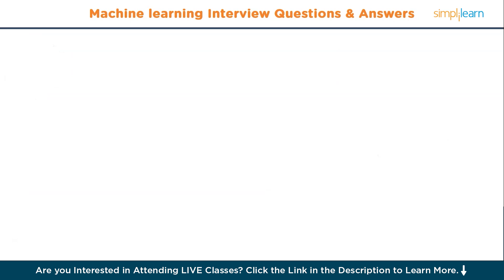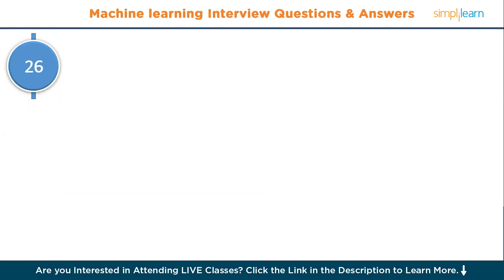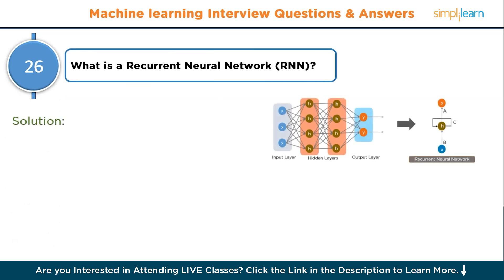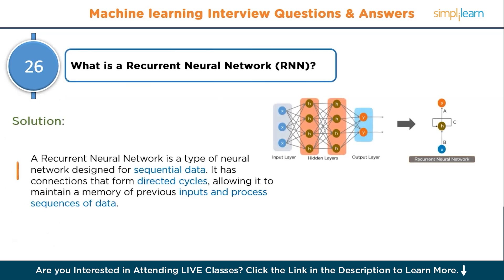Question number twenty-six: what is a recurrent neural network (RNN)? A recurrent neural network is a type of neural network designed for sequential data. It has connections that form directed cycles, allowing it to maintain a memory of previous inputs and process sequences of data.